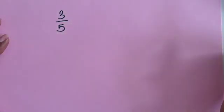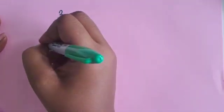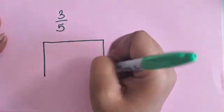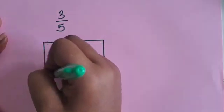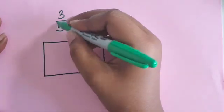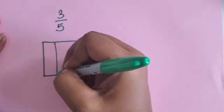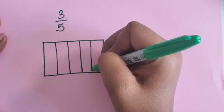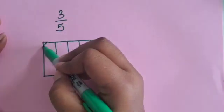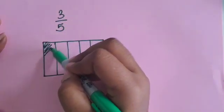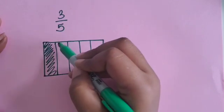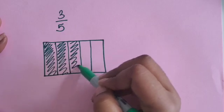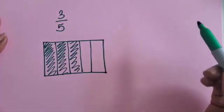Let's look at another example. What if we have 3 fifths? So let's draw our rectangle, partition it into 5 equal parts, and shade in 3 parts. Now we have 3 fifths represented.